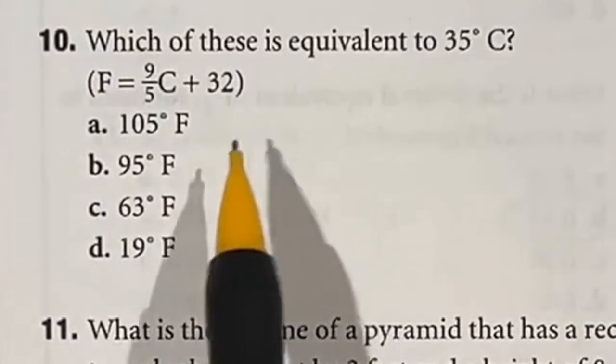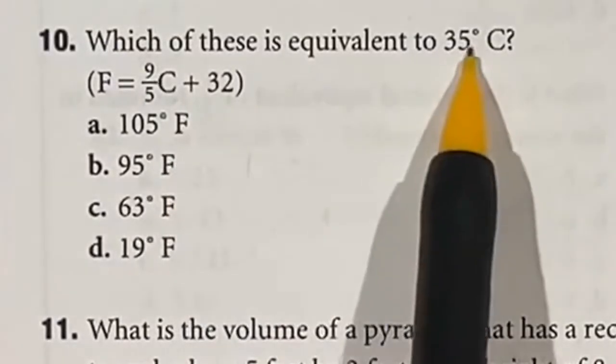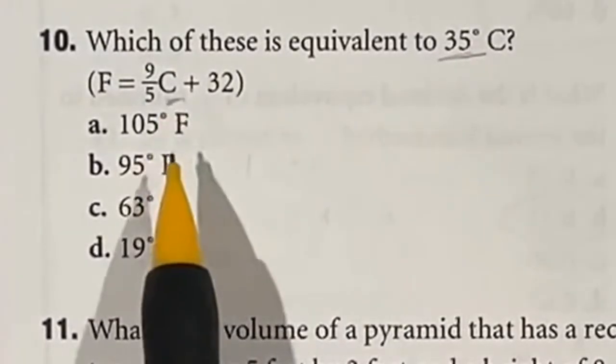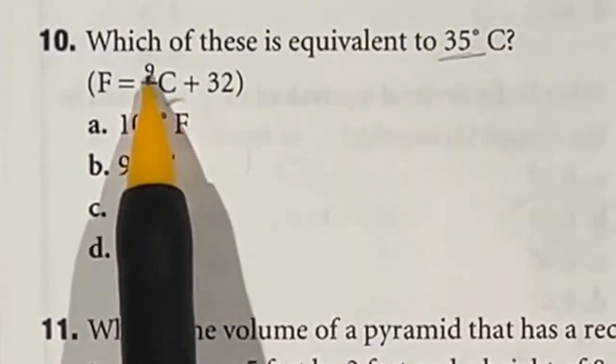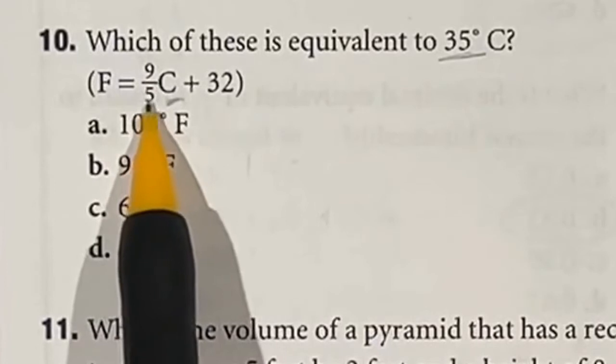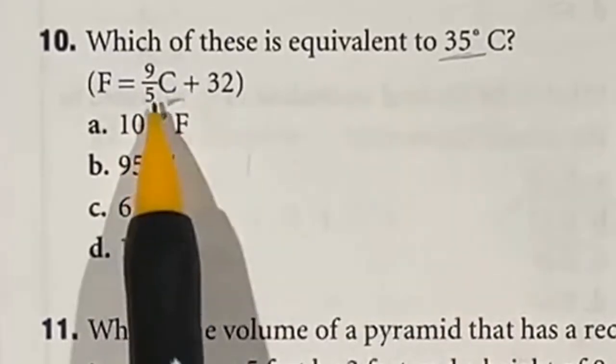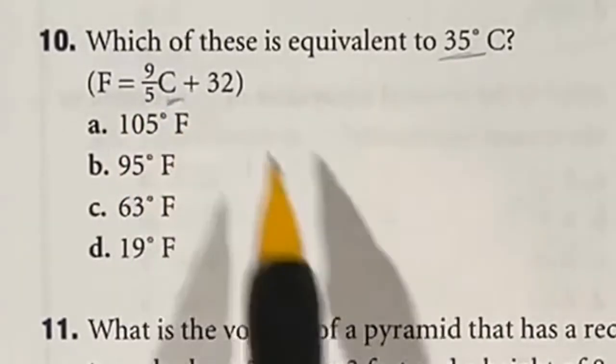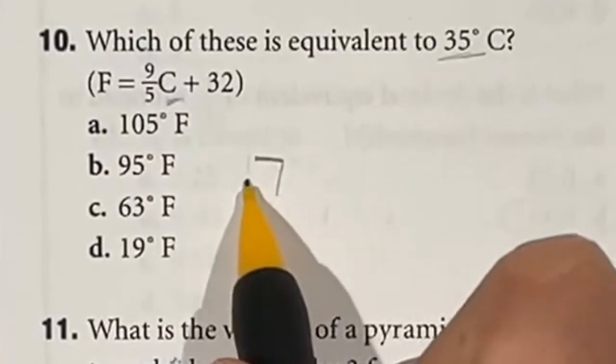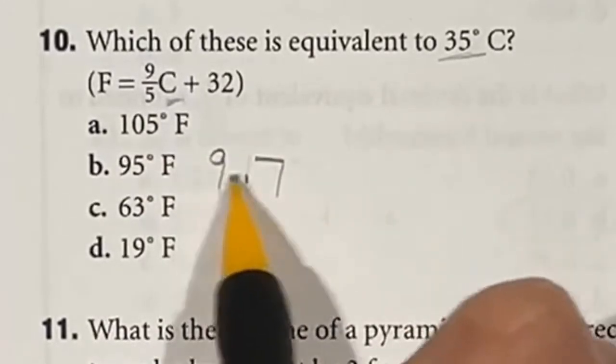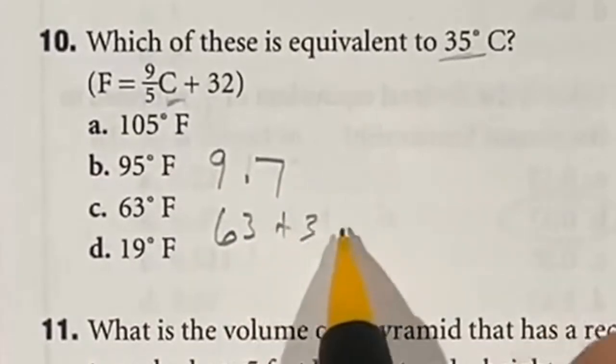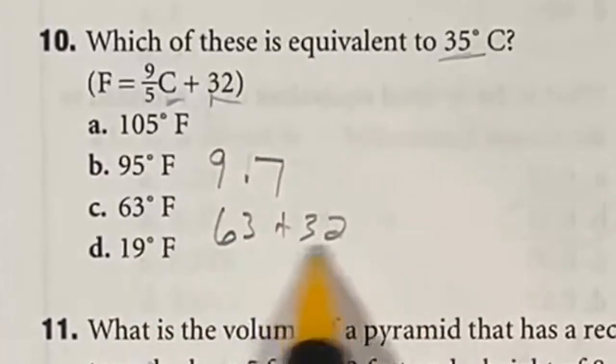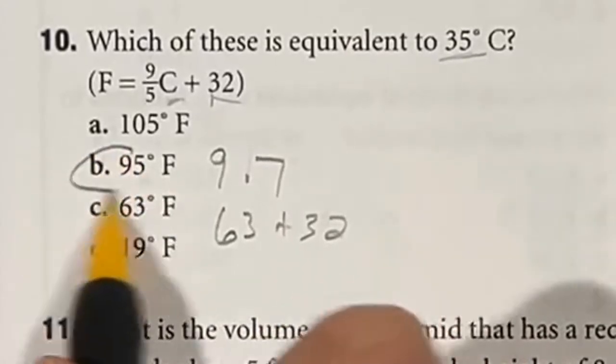Number 10 is only difficult because you can't use a calculator on this test, but we're going to take 35 and we're plugging it in here for C. Now remember, when you multiply by a fraction you're essentially only multiplying by the top number and dividing by the number on the bottom. So to keep the number small, I'm going to divide by the bottom number first. So 35 divided by five just gives us seven, and we still have to multiply that by the nine. But nine times seven is just 63, and then all we have left is adding that 32. So when you add the two of these together, you get a final answer of B, 95.